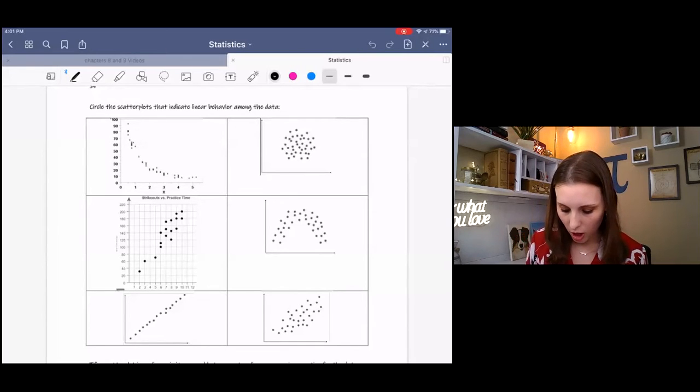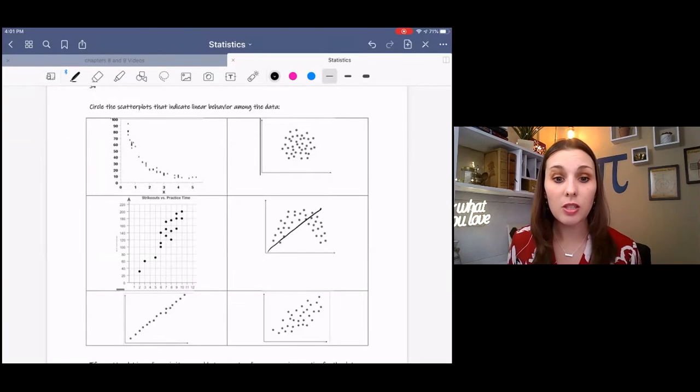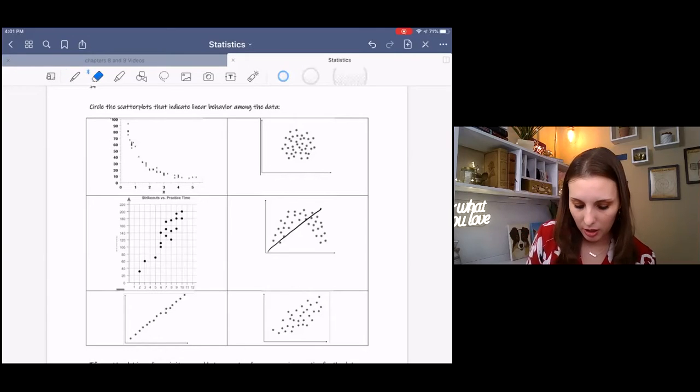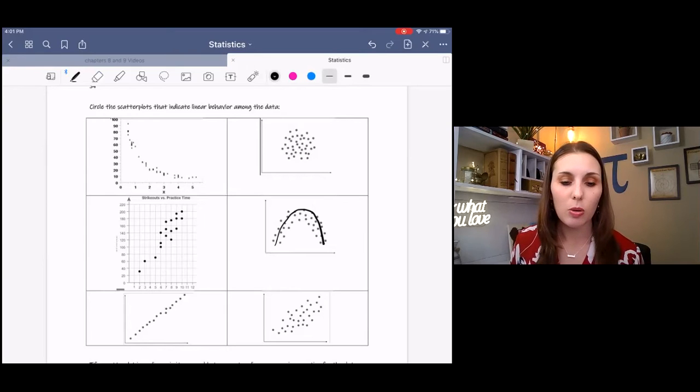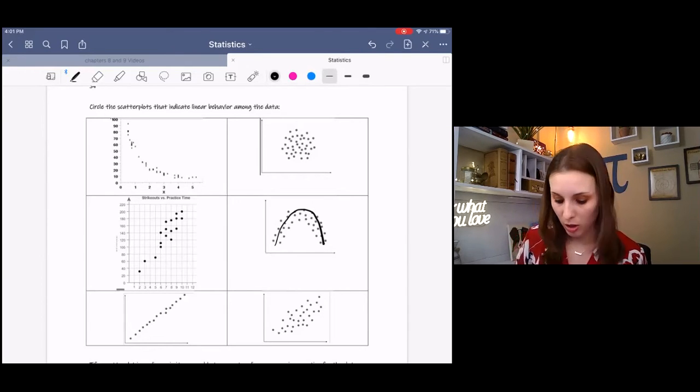So I could draw a line through here and it does go through some of the points, but really it's not linear. It has definite curvature to it. So this would not be a linear pattern. This would be a nonlinear pattern.